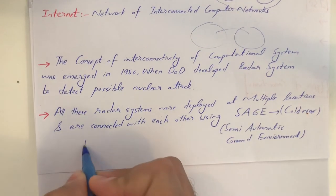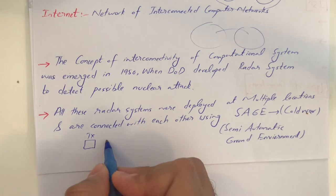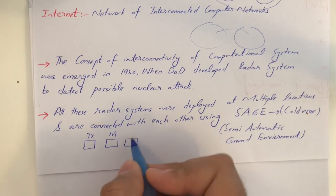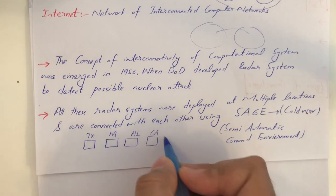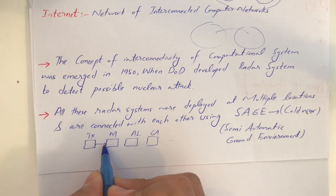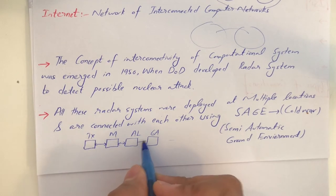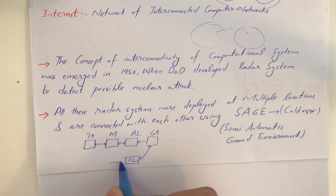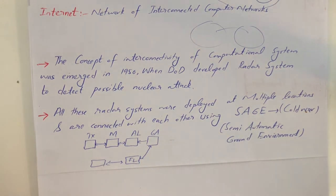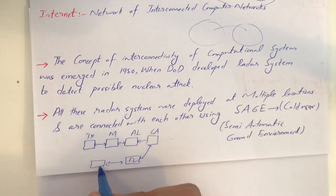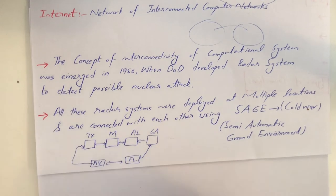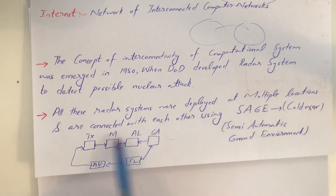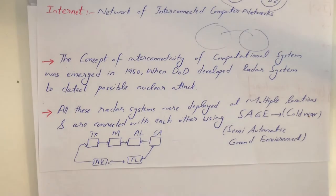Let's say one radar was deployed in Texas, another in Mississippi, one in Alabama, one in Georgia, and so on. All these radar systems were connected in a ring — for example, Georgia connected to Florida's radar, then to New York, and so on. This ring connectivity used SAGE technology. But there was a problem: if an attack destroyed too many locations, it could fail the whole network.